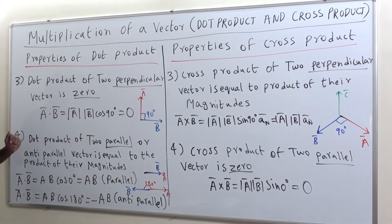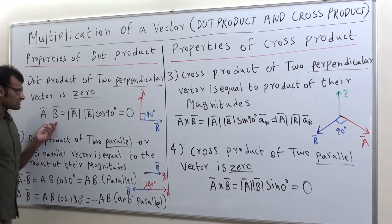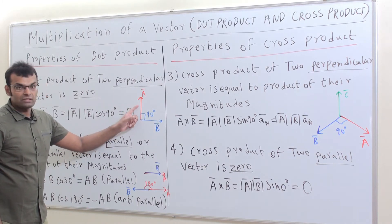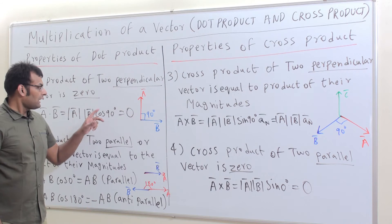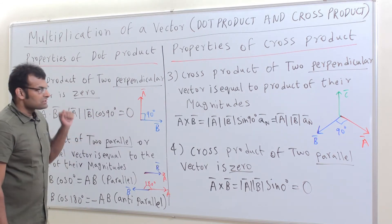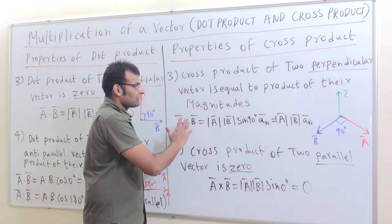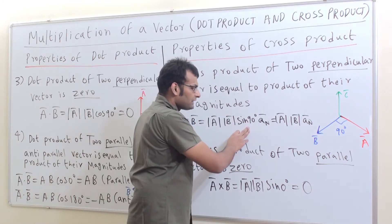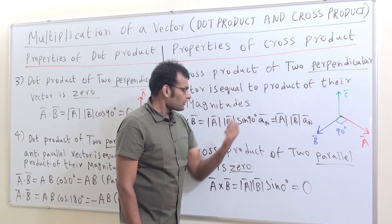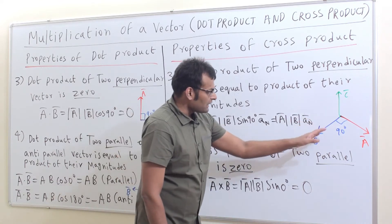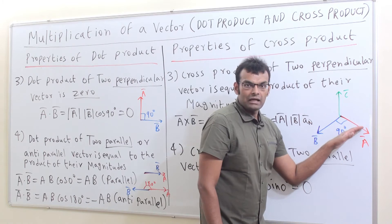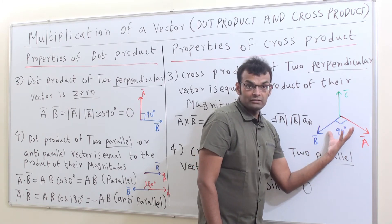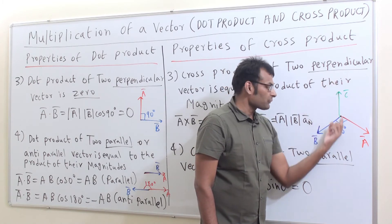The third property: dot product of two perpendicular vectors is 0. That is, A bar dot B bar equals magnitude of A bar into magnitude of B bar into cosine of the angle. If the angle is 90 degrees, cos 90 is 0, so the result is 0. Similarly, cross product of two perpendicular vectors equals their magnitudes: A bar cross B bar equals magnitude of A bar into magnitude of B bar into sine 90 degrees. The result C bar is perpendicular to the plane of A bar and B bar.